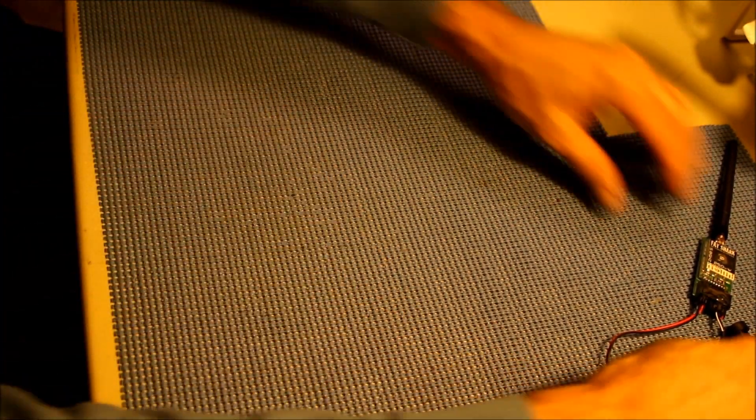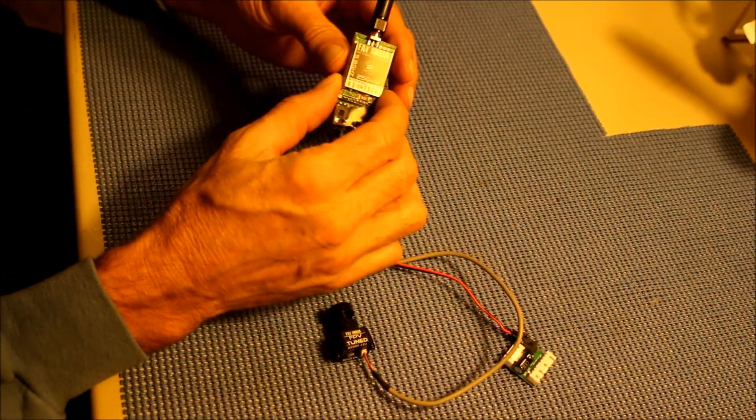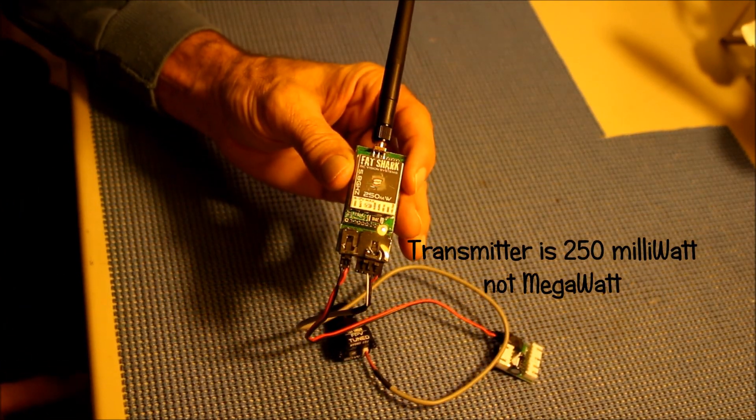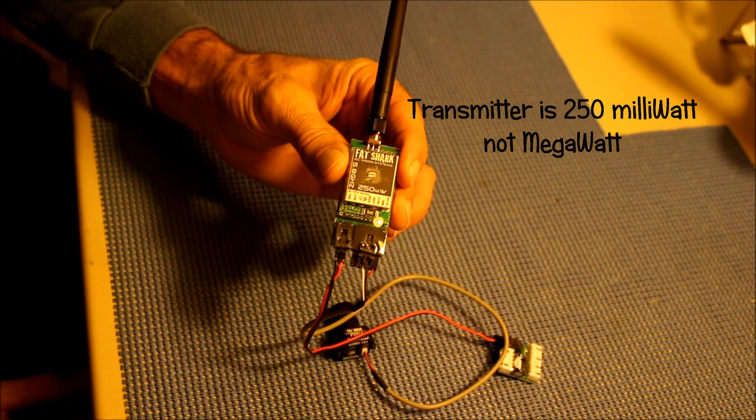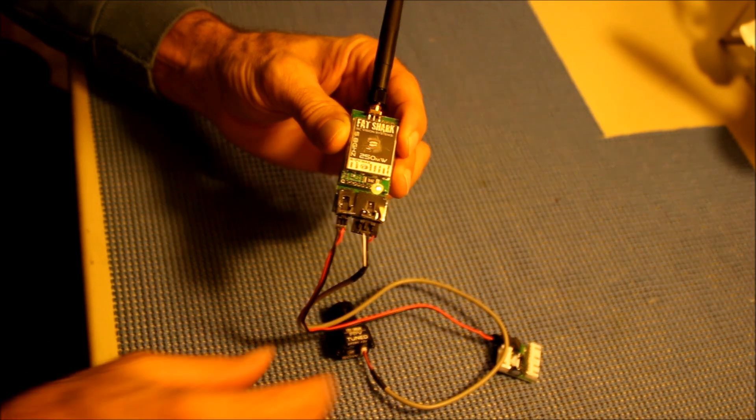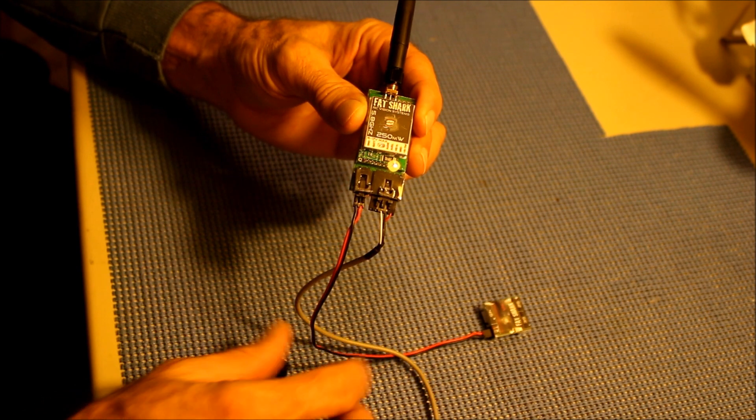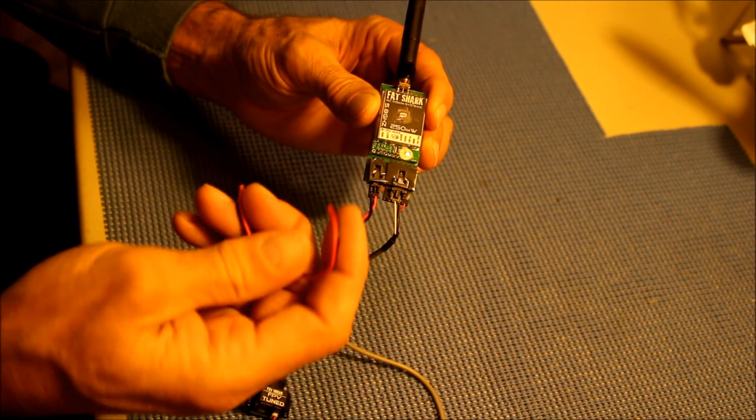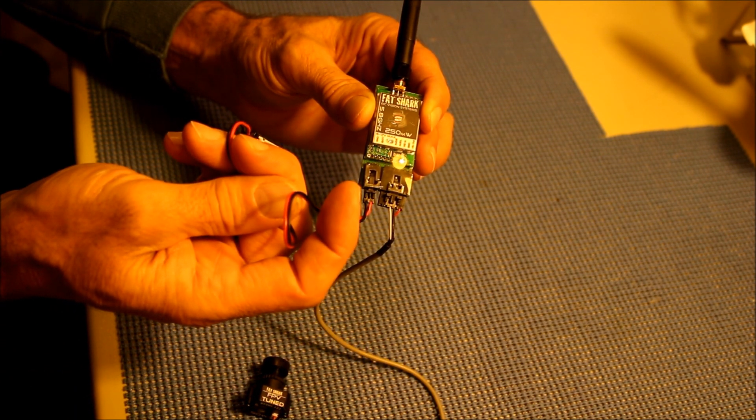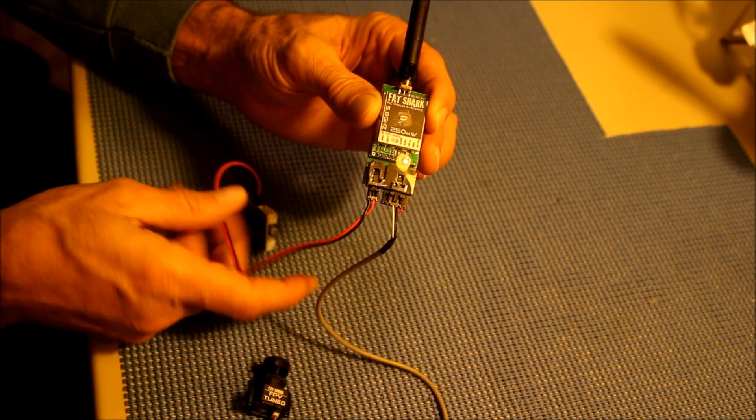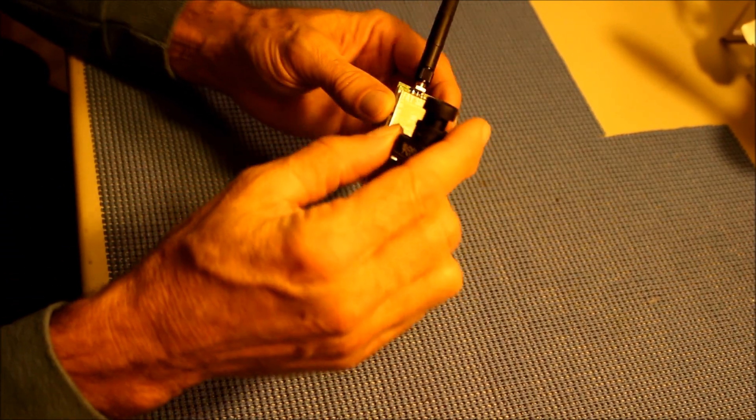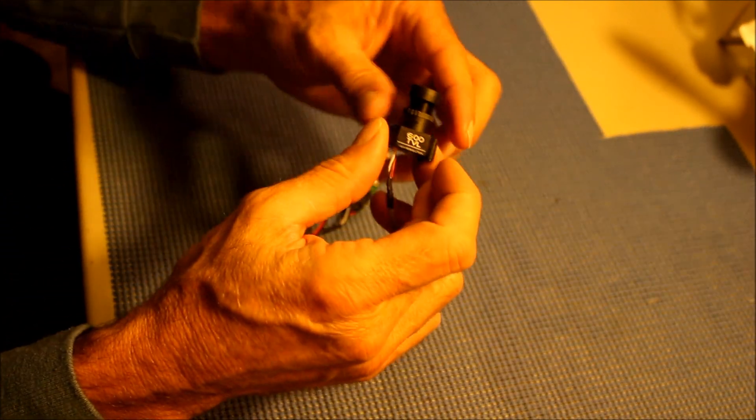The Predator kit comes with a 250 milliwatt Fatshark transmitter. This transmitter is going to get attached to the quadcopter. The transmitter comes with a power cable on one side for powering the transmitter off the quadcopter's battery connection and it also comes with its own video camera.